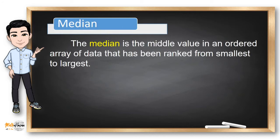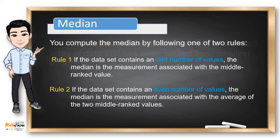The next measure is the median. The median is the middle value in an ordered array of data that has been ranked from smallest to largest. To compute the median, we follow these two rules. Rule number one: if the data set contains an odd number of values, the median is the measurement associated with the middle rank value. If the data set contains an even number of values, the median is the measurement associated with the average of the two middle rank values.